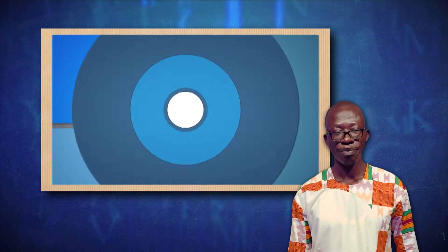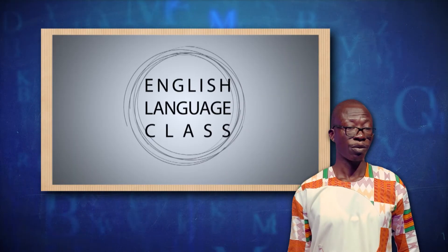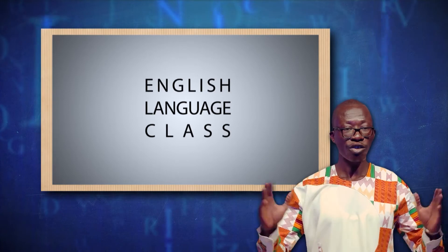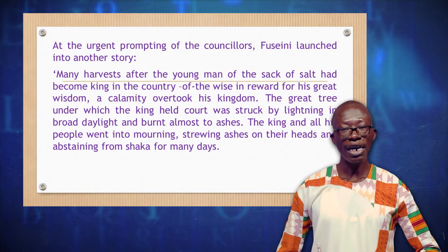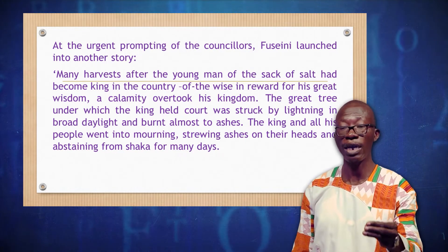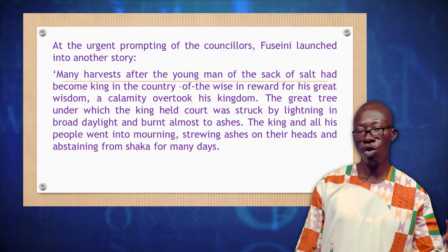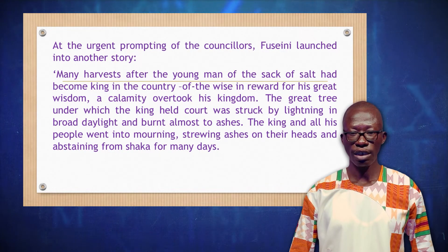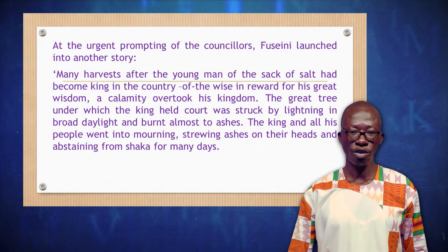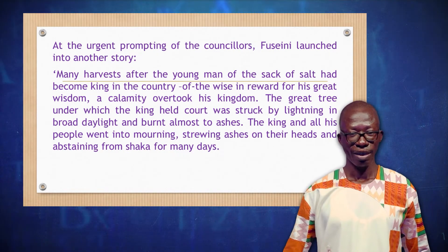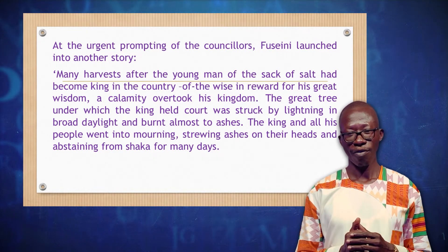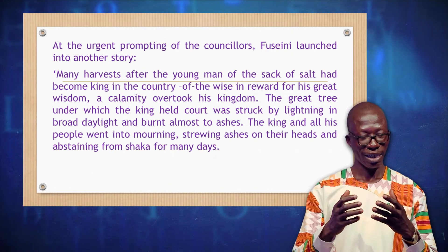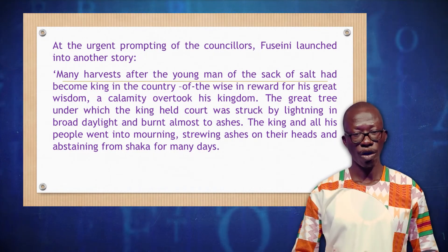Now let's go to the next paragraph. At the urgent prompting of the counselors, Fuseni launched into another story — and what is the story? Fuseni is beginning the story. Many harvests after the young man of the sack of salt had become king in the country of the wise, in reward for his great wisdom, a calamity overtook his kingdom. That's a sentence there. Now let's analyze this sentence and find out how many clauses we have, and find out whether this sentence is a simple sentence, a compound sentence, or a complex sentence.